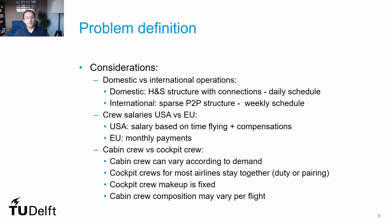This is considered to be a very hard problem to solve, and there are many variations that follow different requirements. For instance, there are several differences between domestic and international or intercontinental operations. Domestic operations are usually based on a hub-and-spoke structure for crews, in which connections between multiple flights are observed in their schedules, and every single day could be different from the other.